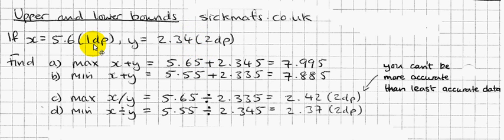So that's the easy bit. If I'm trying to find the maximum x plus y could be, given they're both rounded, I have to find the maximum of each of them and add them together. As simple as that,